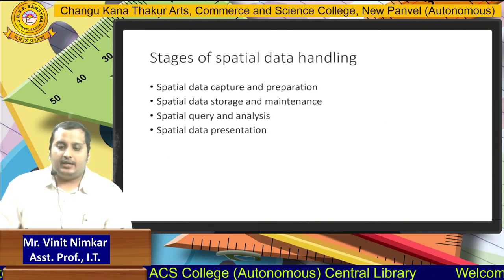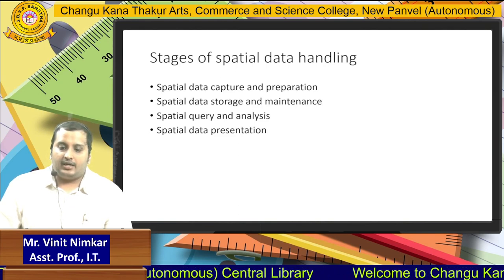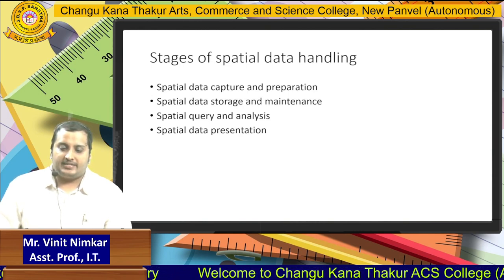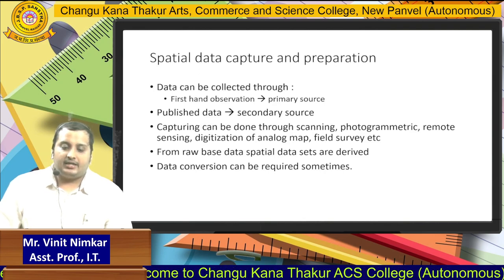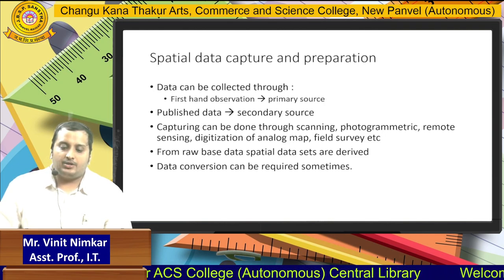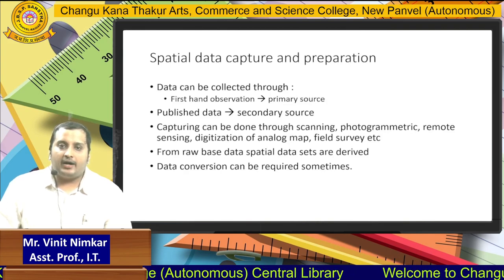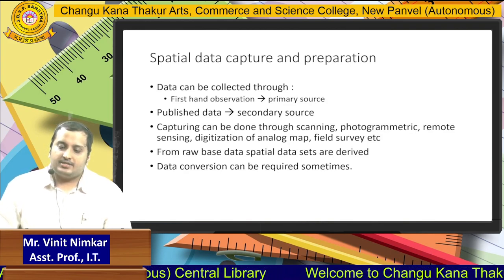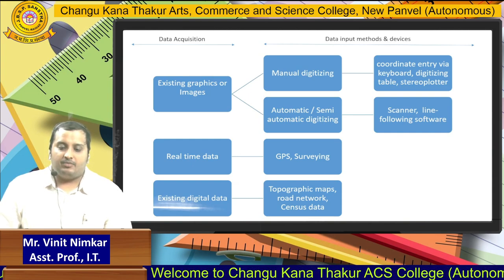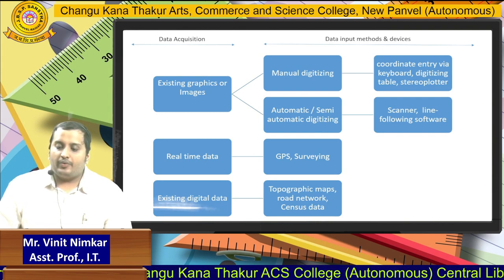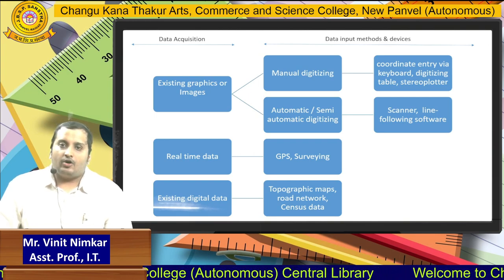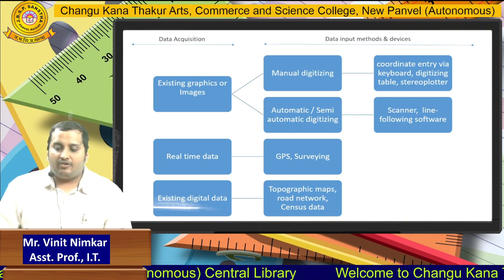The four stages of spatial data handling are: data capture and preparation, data storage and maintenance, query and analysis, and spatial data presentation. For data capture and preparation, data can be collected directly from first-hand sources, which is called a primary source. If we are capturing data from third-party sources, it is called secondary sources. Data acquisition can be from existing images or real-time data. Data input methods include digitizing, collecting from GPS, or surveying topographic maps.